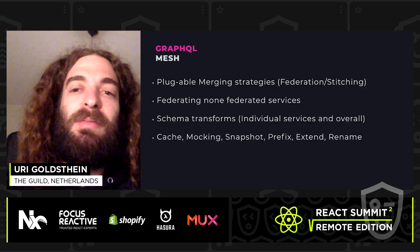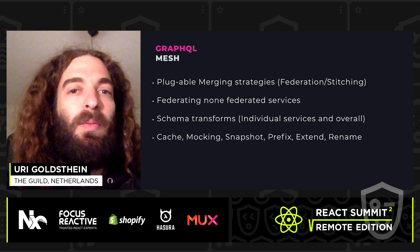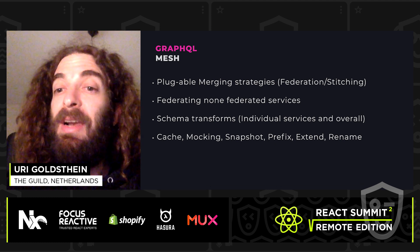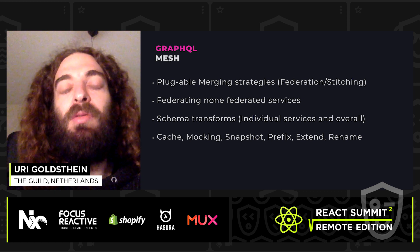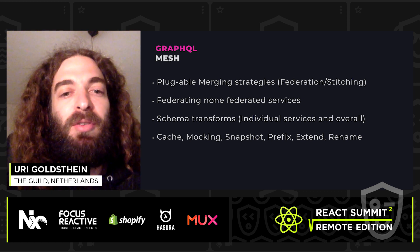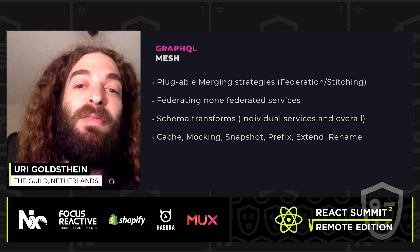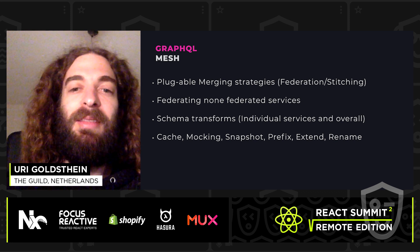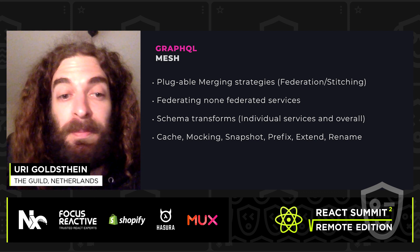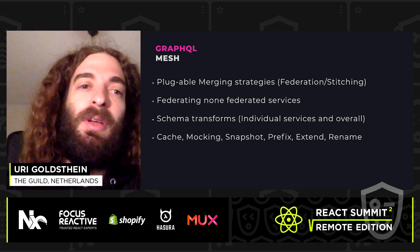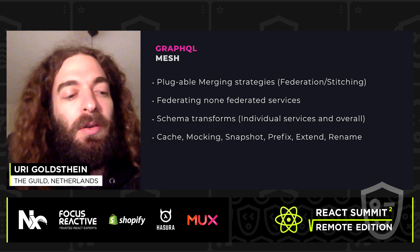The merging I showed you was with stitching — by the way, we took over schema stitching, improved it, and released new versions to make it undeprecated. But you can also use federation for doing those stitchings. More than that, we have a way for you to take existing services and even Swagger services and add federated metadata into them, and then federate services that are not federation at all. We can mock each one of those sources, snapshot, prefix, do any transformation you want. It's all pluggable.